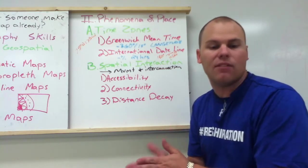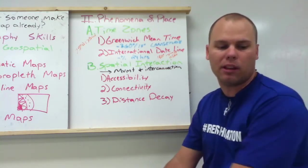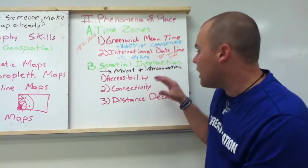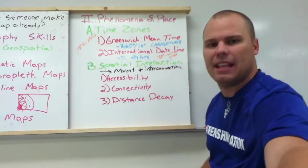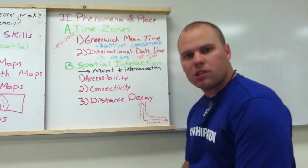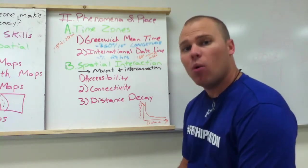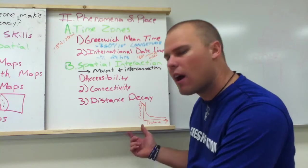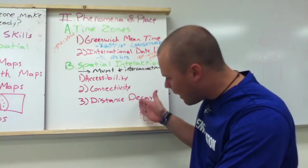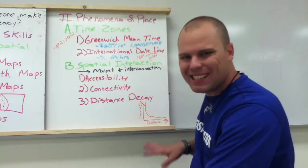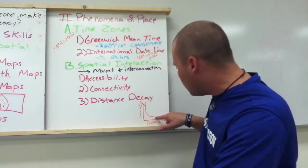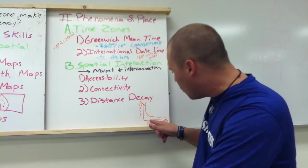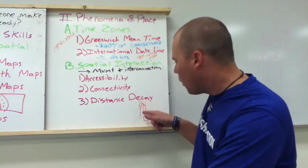The next main concept is connectivity — how connected a place actually is. It involves the relationships among people, objects, and places across space and how connected they are within that space. We're looking at the distance decay principle — the further away from a place you get, the less interaction there is with people. A graph showing commuting versus distance illustrates that the further you get from a place, the fewer people go there. The closer something is, the more people are willing to travel.